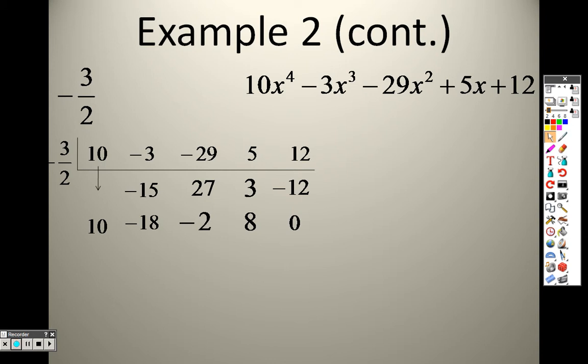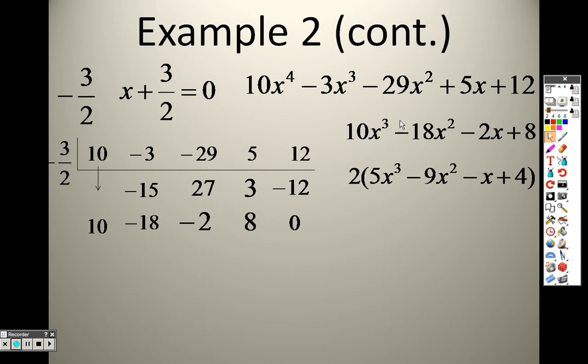How in the world does that seem to work? Well, what this means is since I started at x to the 4th, this is now x cubed, squared, x, and 8. So I know that since this was negative 3, one of the equations is x plus 3 over 2. Then I also know that this is 10x cubed minus 18x squared minus 2x plus 8 because this started at x to the 4th, so this is now x cubed. So when I'm looking at this right here, I know that they all have a 2 in common, so I take a 2 out of both of these terms. So I have the 2 on the outside, I have the x plus 3 halves, and then I have what's left over.